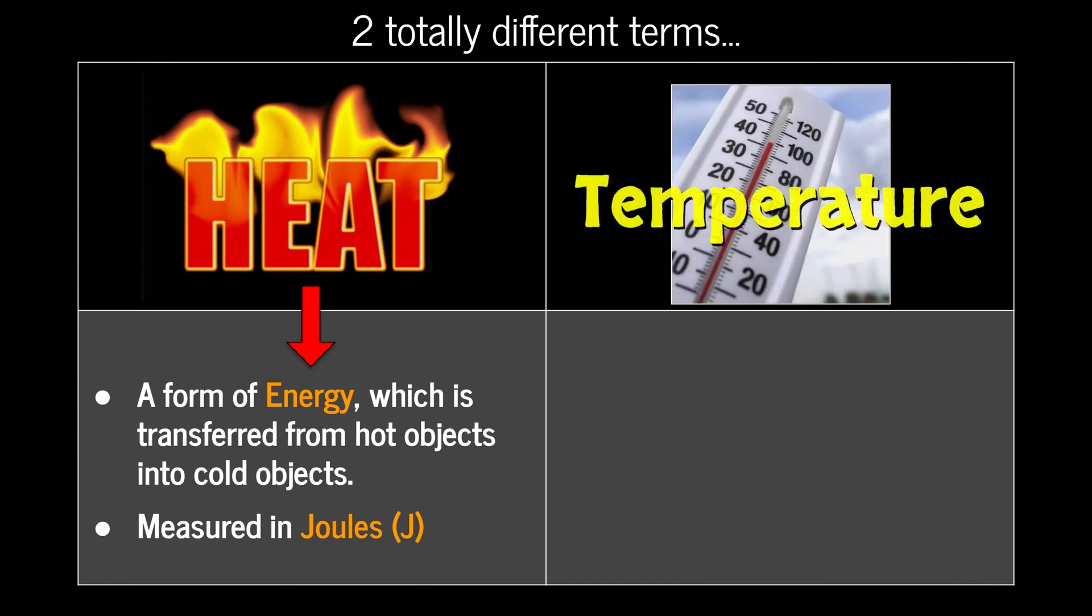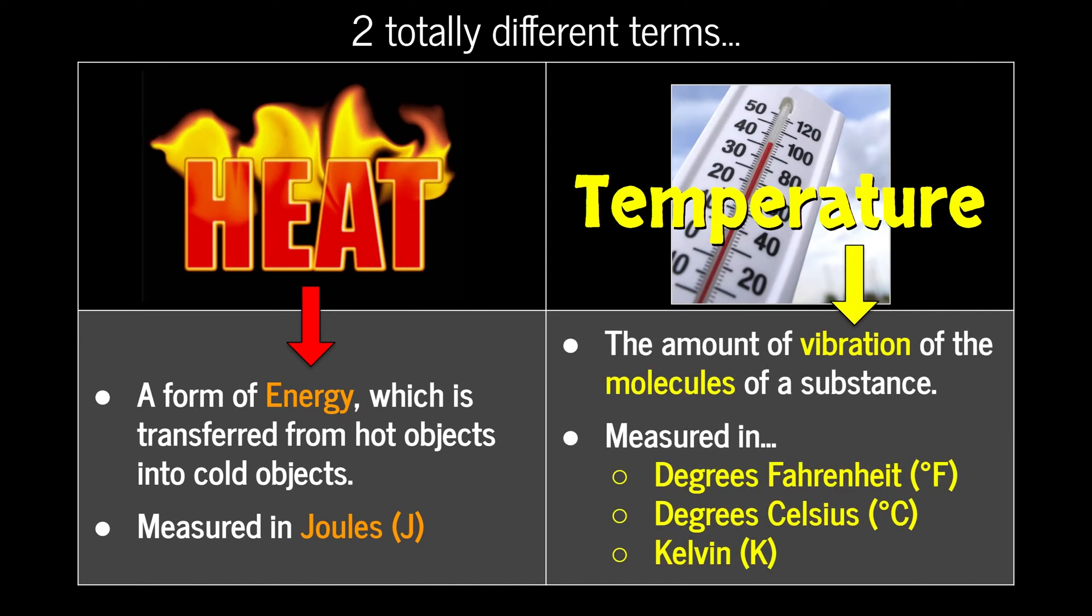The other word is temperature. Temperature does actually mean how hot or cold something is, but what does it mean and how is it different from heat? Temperature is the amount of vibration of the molecules of a substance. This vibration can be measured using all kinds of temperature scales such as degrees Fahrenheit, degrees Celsius, or Kelvin. We'll discuss all three of these in this video.